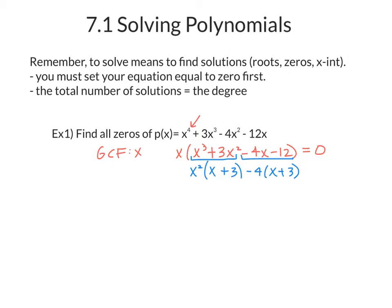And so this part, if I factor, is going to give me x plus 3 times x squared minus 4. And I'm going to bring down the x from the GCF in the very beginning.